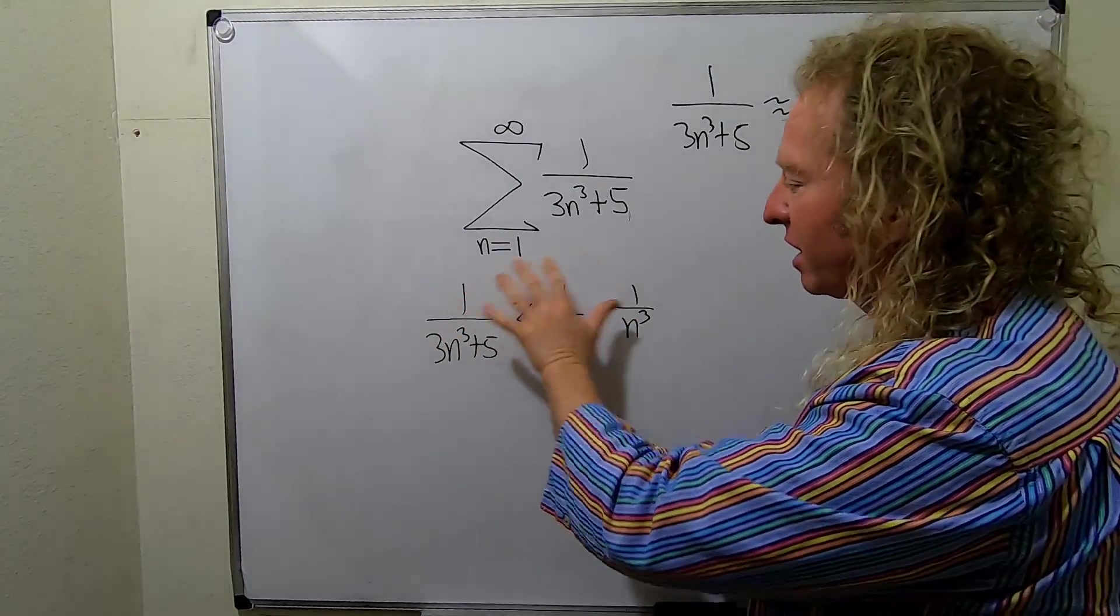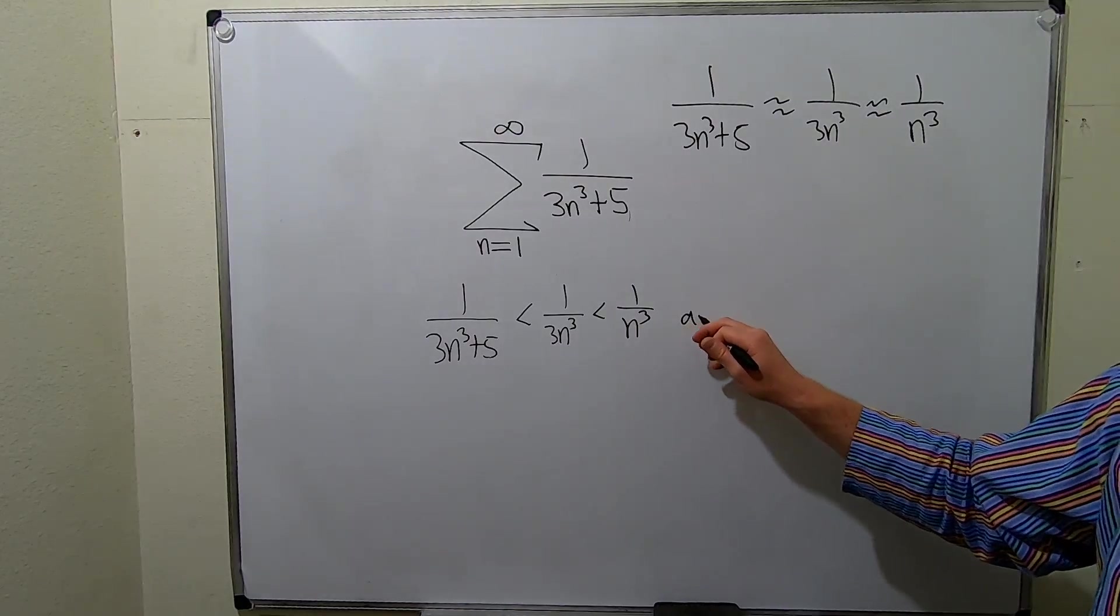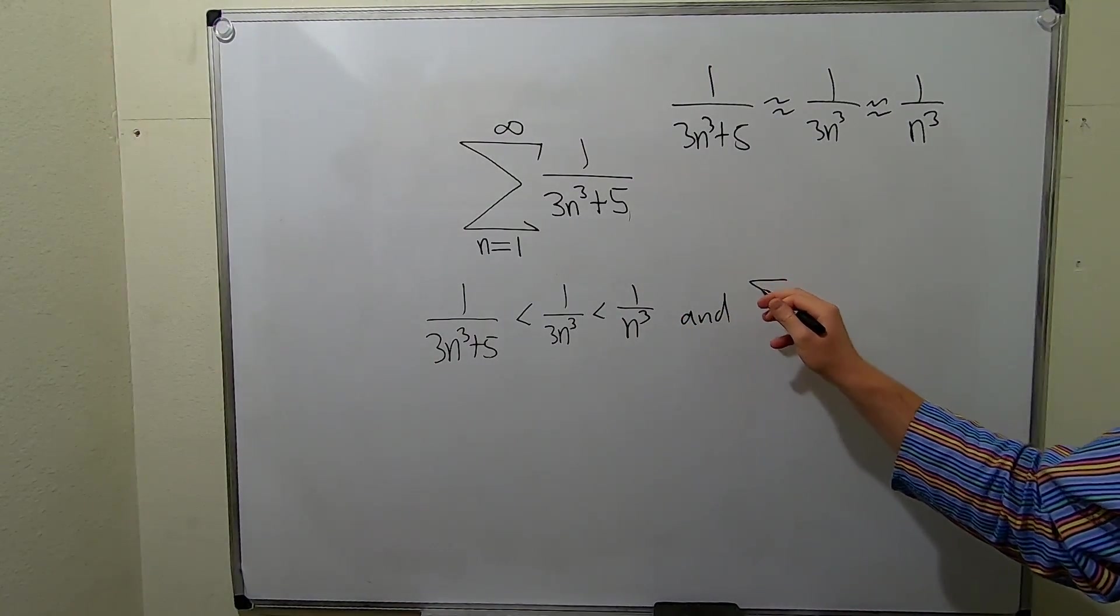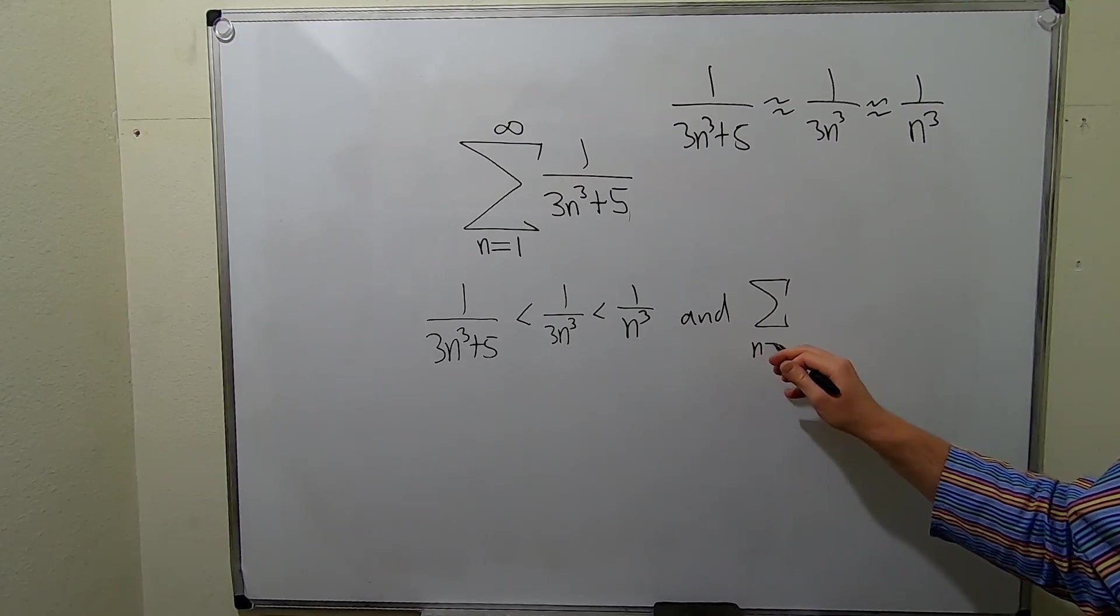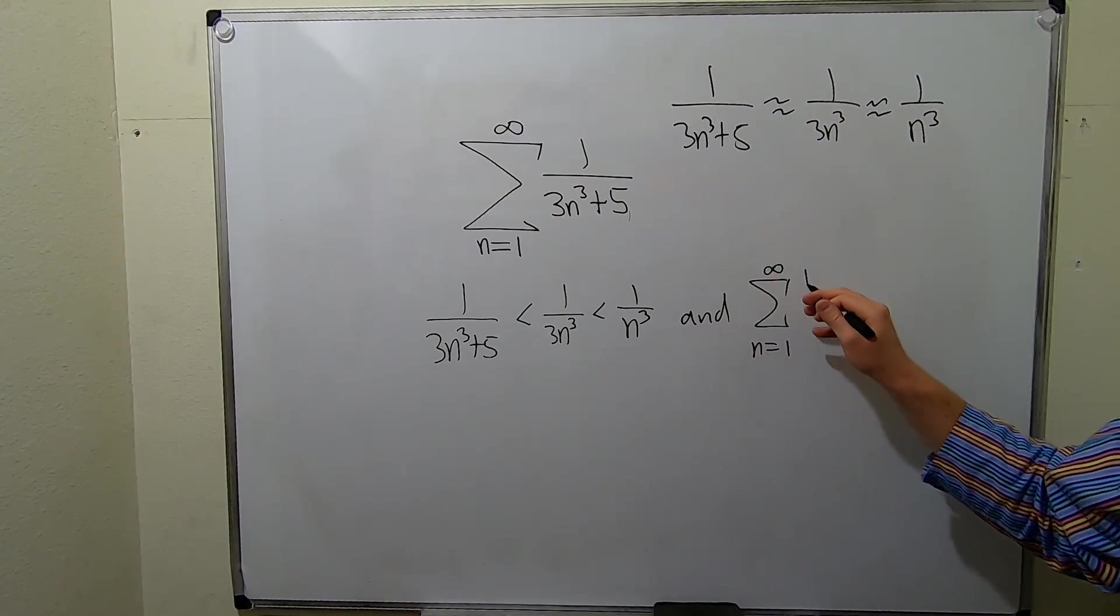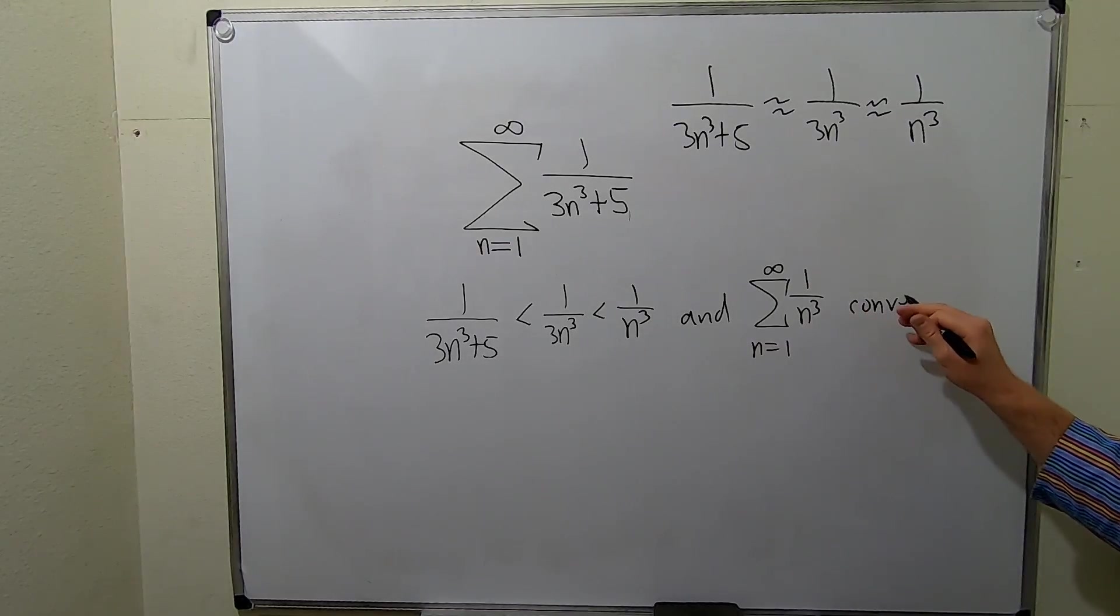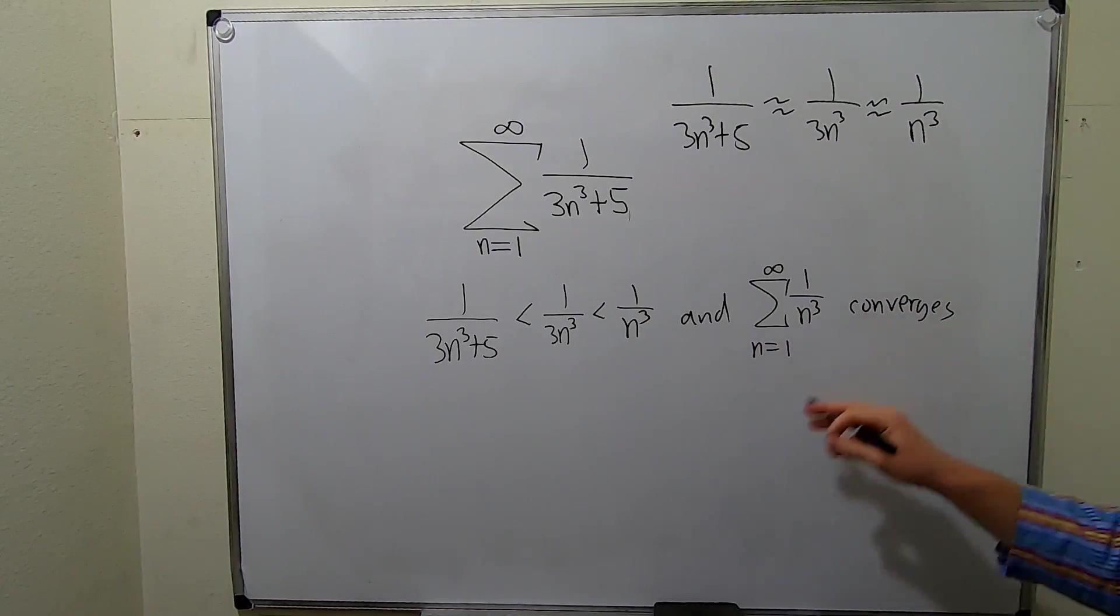We have that this is less than this, and now we have to explain why the sum of these terms converges. The sum as n runs from 1 to infinity of 1 over n cubed converges by the p-test.